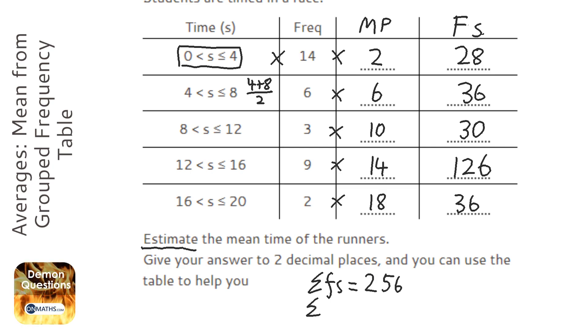And then we're going to sum up the frequencies, which is this column here. So, 14 plus 6 plus 3 plus 9 plus 2, which is 34.